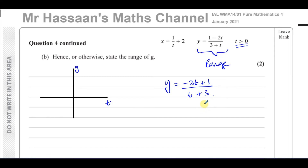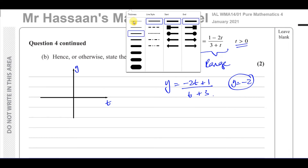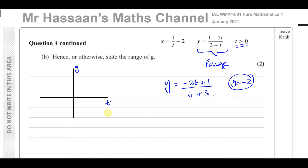Here's a quick way to work out the asymptotes without splitting into partial fractions. If you divide the coefficients of t — the leading coefficient of the numerator by the leading coefficient of the denominator — you get minus 2. So y equals minus 2 is the horizontal asymptote. The vertical asymptote is where the denominator equals zero, which is t equals negative 3.